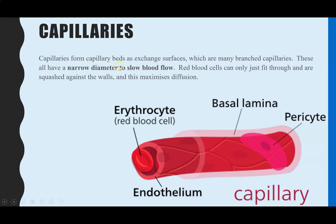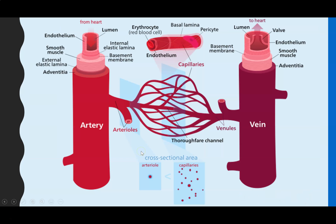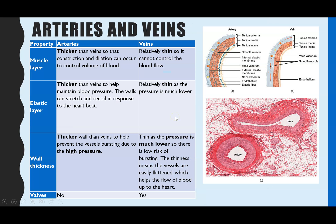You also have capillary beds — we've been looking at one single capillary, but in this diagram we can see the capillary bed, or network of capillaries. So you don't just have one; you have a whole branching network.